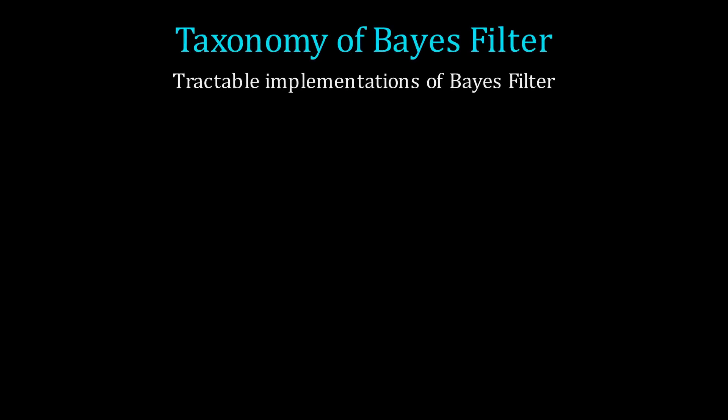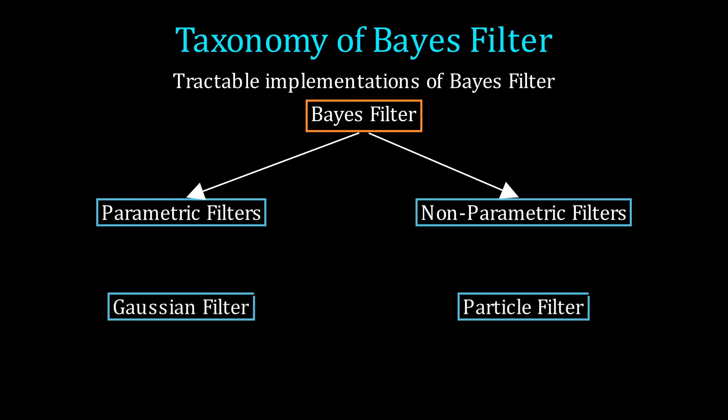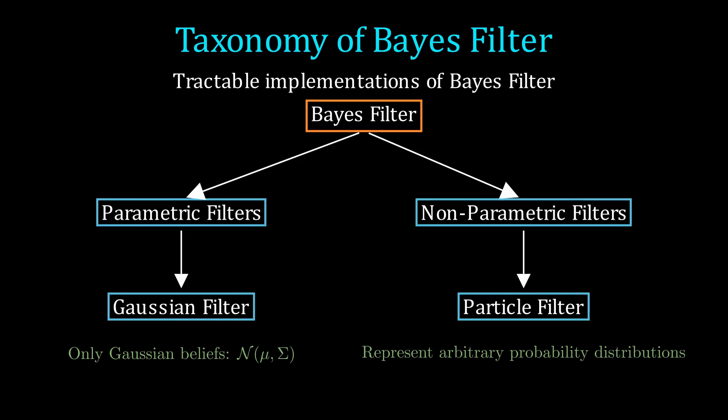The particle filter is a non-parametric filter, meaning that the distribution is not determined by a fixed number of parameters. Compare this to a Gaussian, where the entire distribution is defined by its mean and covariance. With non-parametric filters, we can represent arbitrary probability distributions, and the granularity of these distributions scales with the amount of computation we choose to use.